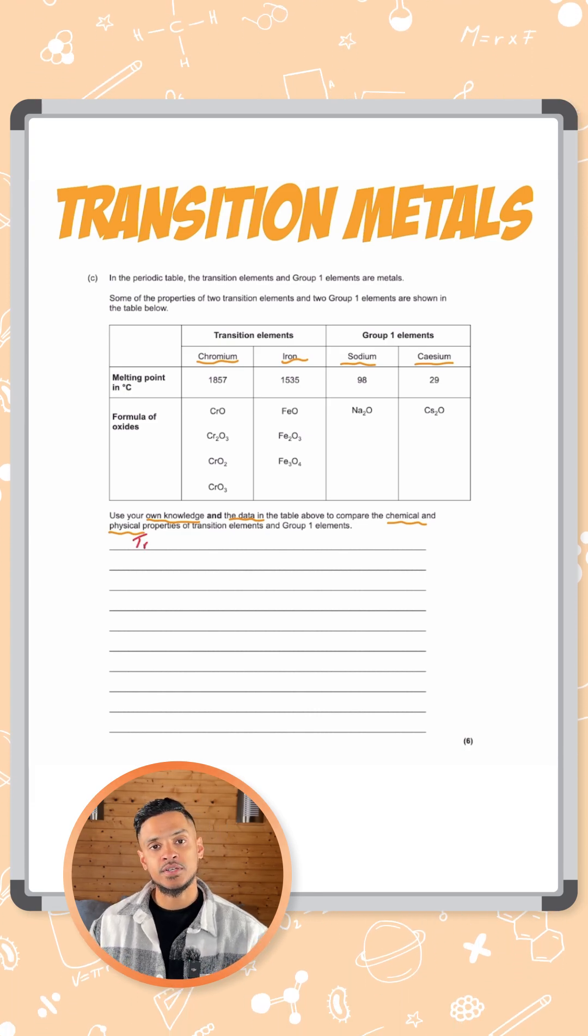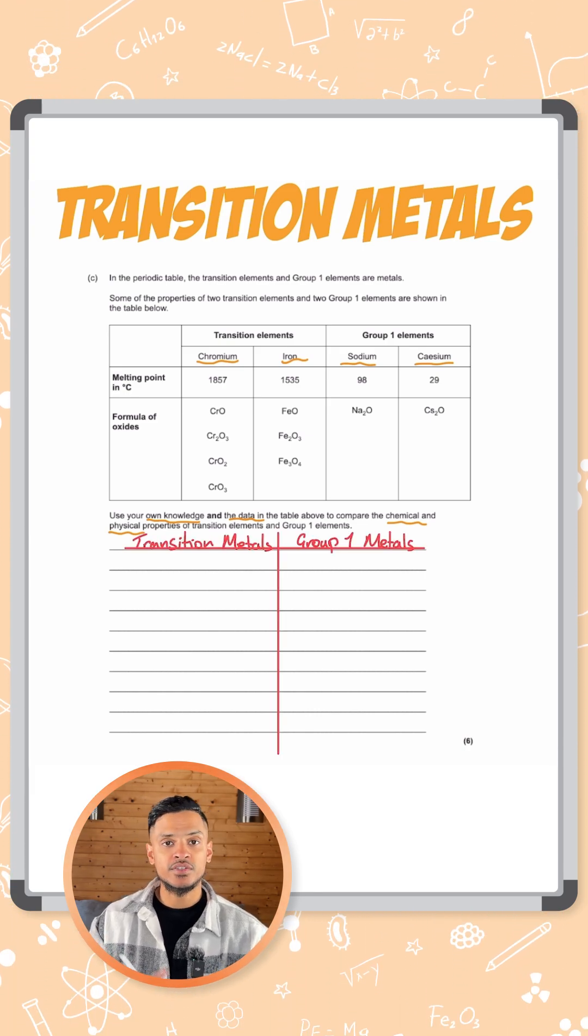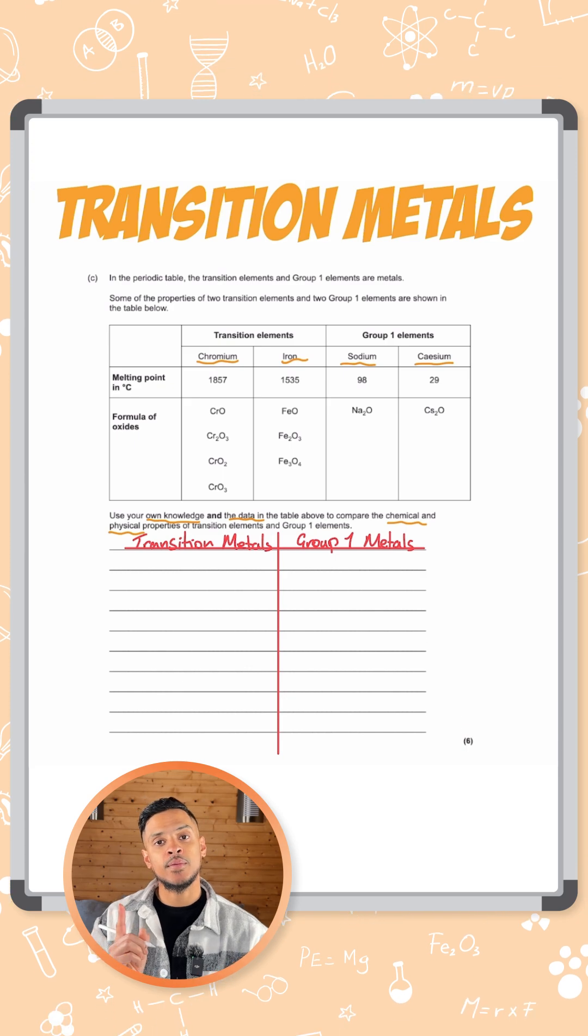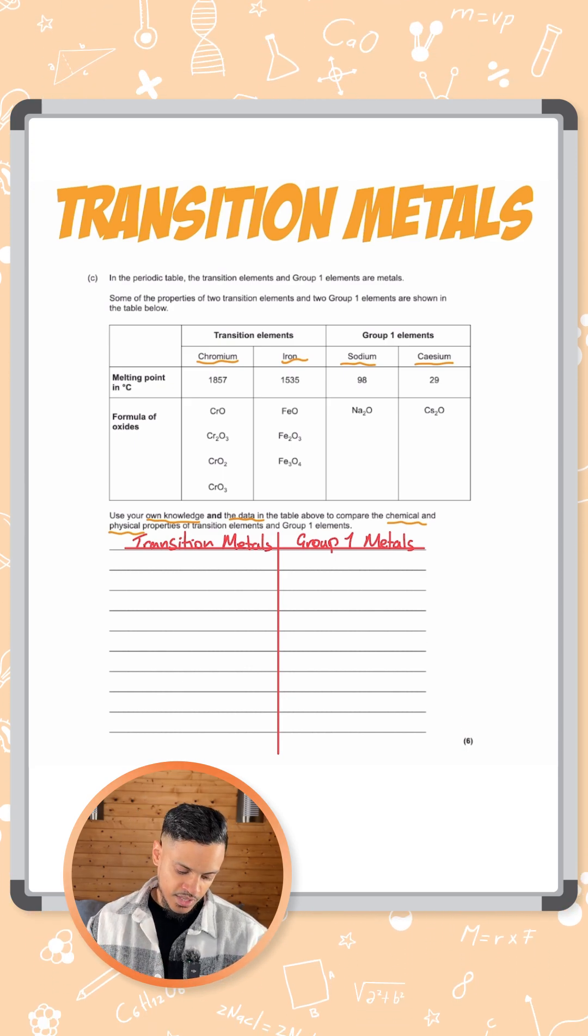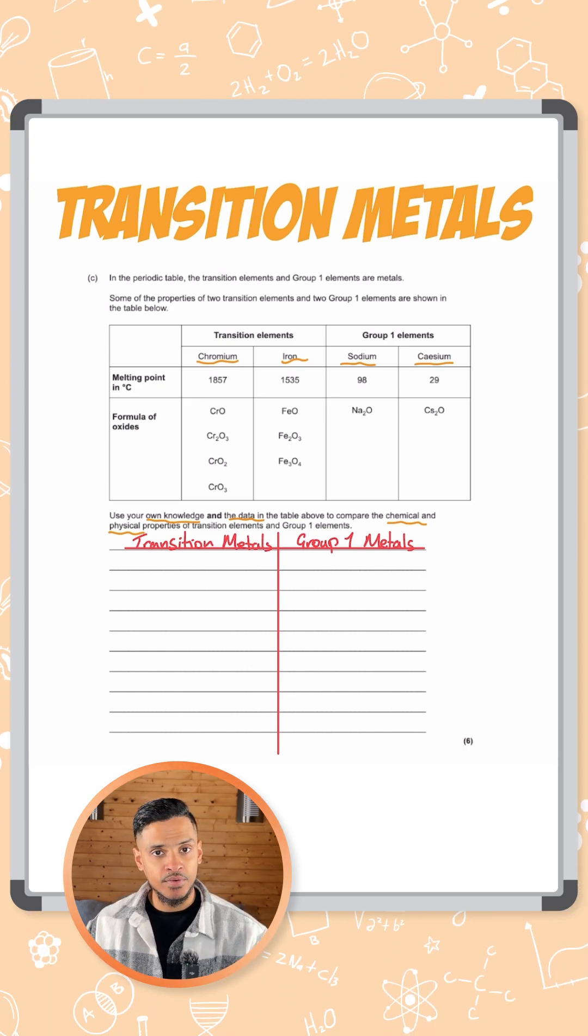So what I'm going to do is split up the question into two parts here. We've got transition metals on the left and group one elements on the right. So let's talk about what's in the table first of all.